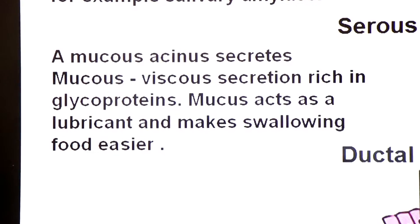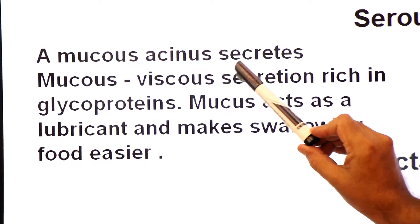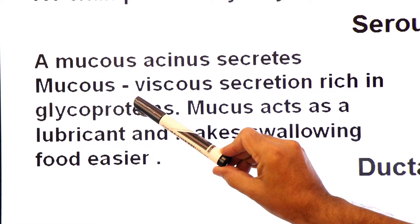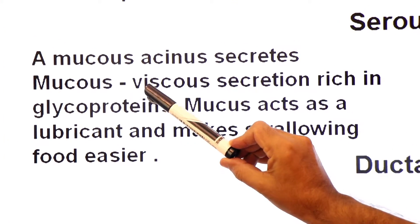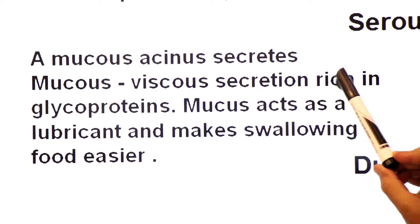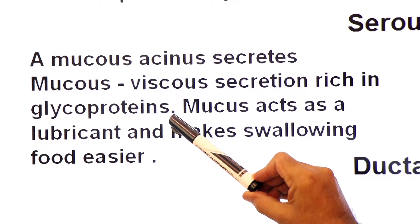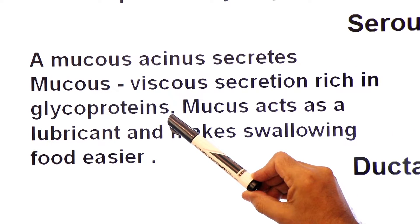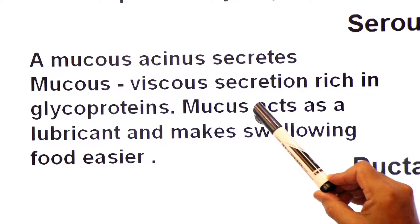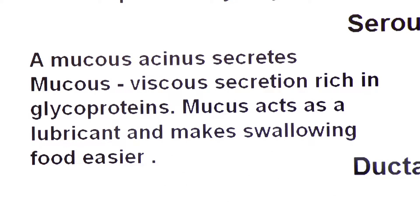A mucous acinus is made up of mucous acinar cells and secretes mucus — a viscous secretion rich in glycoprotein. Mucus acts as a lubricant and makes swallowing much easier.